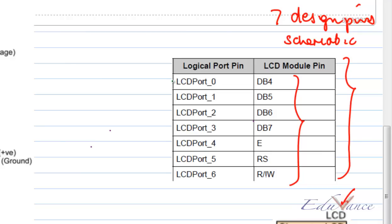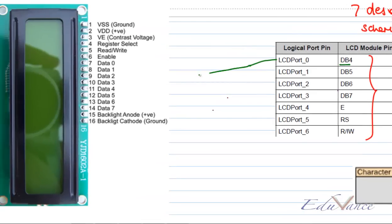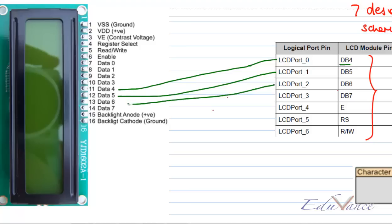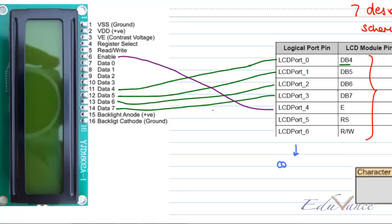You would take this connection here which is DB4 and connect it to your data bit 4, that is pin number 11 of your LCD. Port 4 will go to enable, which is pin number 6. Port 5 of your component — please understand this is the port of your component — would go to register select, and port 6 would go to read/write bar.